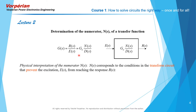Let us now look at the transfer function and evaluate it at the roots of the numerator N of s. You have to look at both sides of the equality. When you evaluate this transfer function at the roots of the numerator on the right-hand side you get zero, because the roots are the zeros of the transfer function. On the left-hand side you have R of s over E of s, which when evaluated at the root of the numerator is also equal to zero.